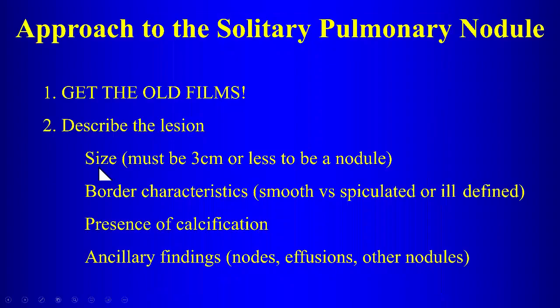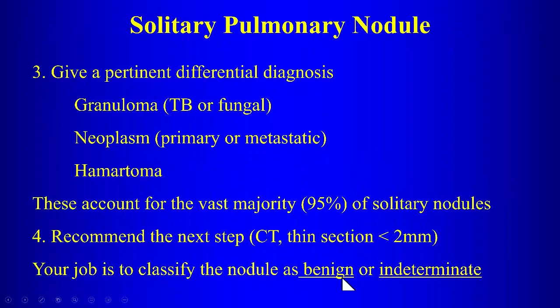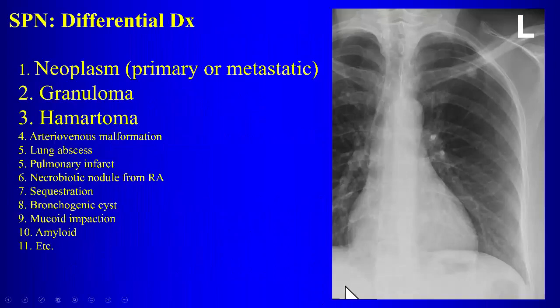To review: look at border characteristics, calcifications, and ancillary findings. The pertinent differential — those three entities — make up over 95% of solitary lung nodules. If you don't have old films, do CT to decide whether the nodule is benign or indeterminate. Textbooks give lengthy differential lists, but those three things are what to remember, with hamartoma a distant third.